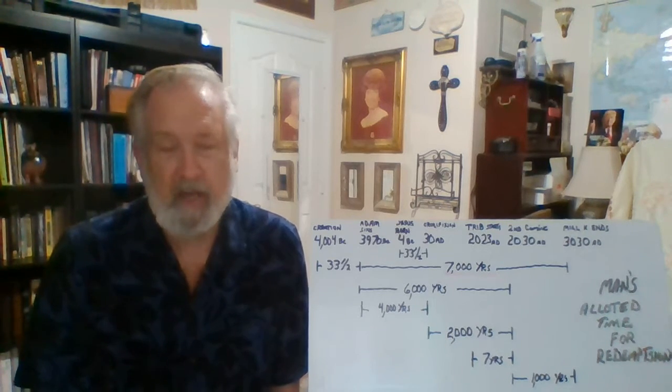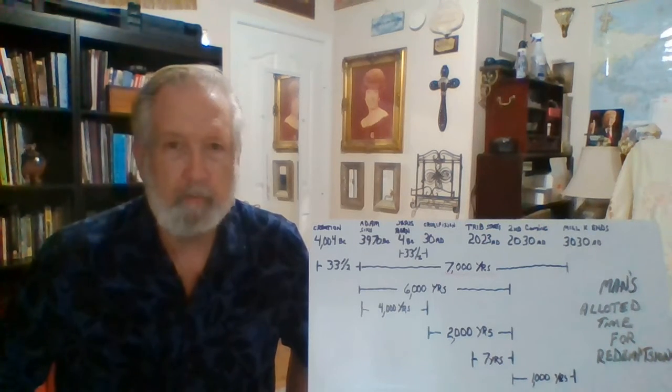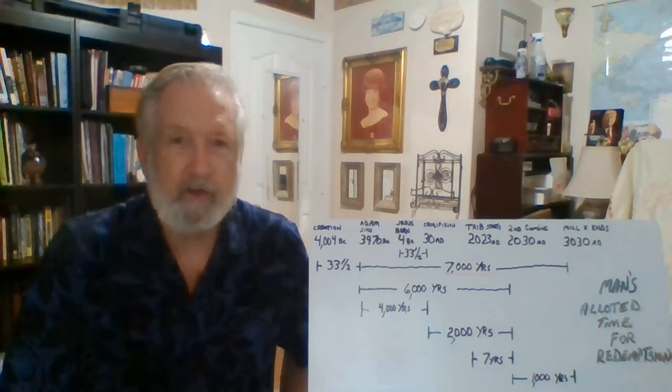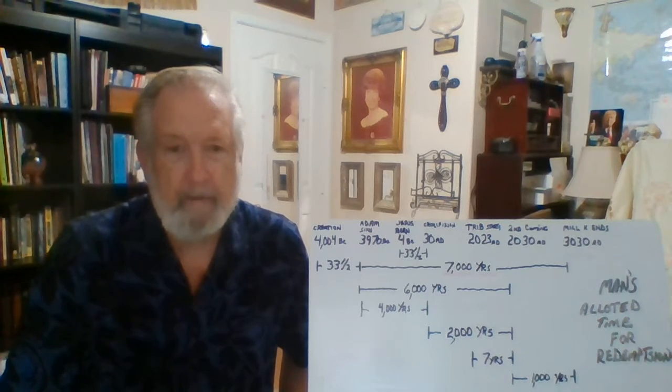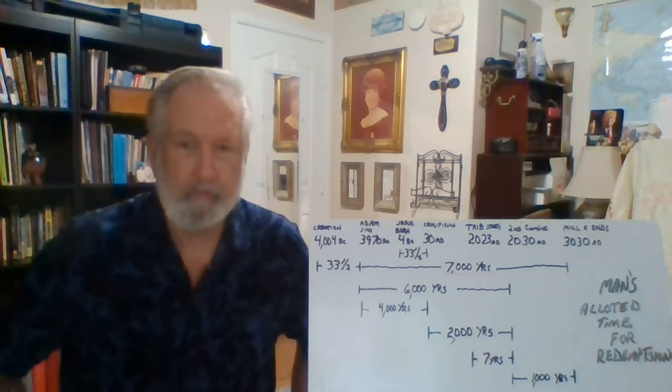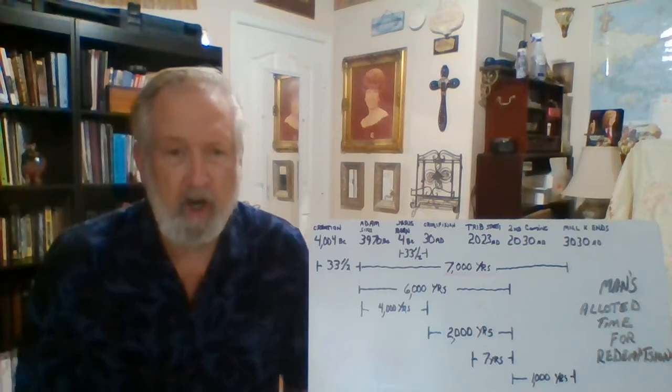Now let's just kind of go through this. In the year 4004 BC, Bishop Usher and others' notation of when creation took place. We go all the way to the end of the Millennial Kingdom on this particular chart.